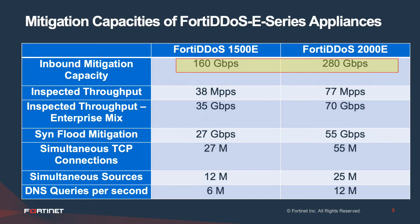Given these trends, we have created two models: the 1500E and 2000E. The 1500E model has an increased inbound mitigation capacity of 160 Gbps, whereas the 2000E can block all the way up to 280 Gbps of inbound attacks.